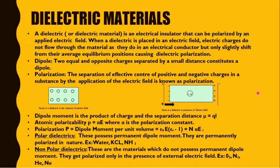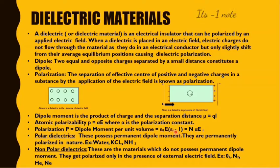Now for dipole moment: Q is the charge and L is the separation distance, so dipole moment μ equals Q times L — it is the product of charge and the separation distance. For atomic polarizability, denoted as p = αE, where α is the polarization constant. The polarization formula is: P = ε₀E(εᵣ − 1) = nαeᵢ.